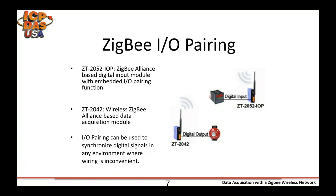ZigBee alliance-based modules with I/O pairing can be used to synchronize digital signals in any environment where wiring is inconvenient. The ZT2052 IOP features ISM 2.4 GHz operating frequency, wireless transmission range of up to 700 meters, and is fully compliant with the IEEE 802.15.4 standard. The ZT2042 offers four photo MOS relay output channels and four sync digital output channels with short-circuit protection. Each channel features photocoupler isolation, eight LED indicators to display the DO channel status, 4 kV ESD protection, and 3000 VDC inter-module isolation as standard.